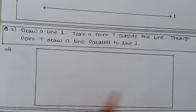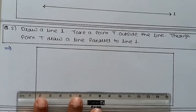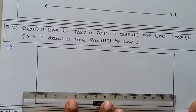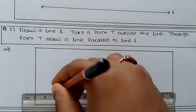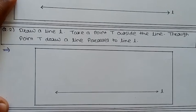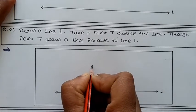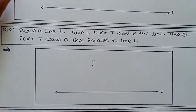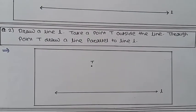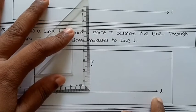So first of all we have to draw one line named line L. By using the scale, draw one line first and name it L. Now we have to take a point T outside the line — suppose I take point T here. Then we have to draw the parallel line through point T, so by using the set squares we draw one parallel line.